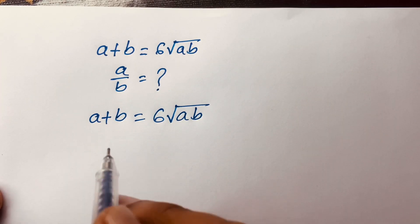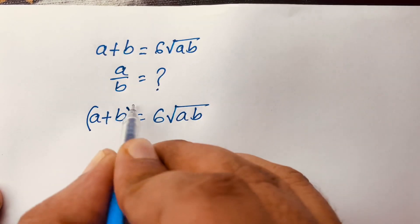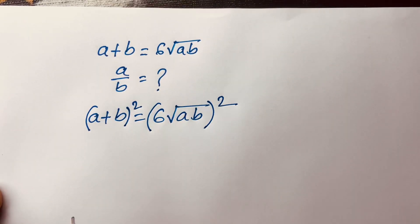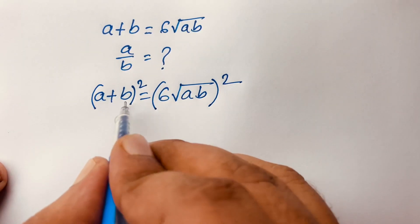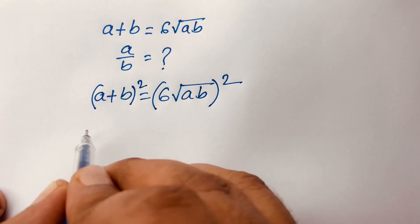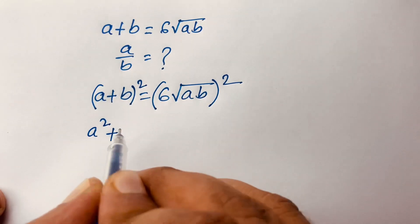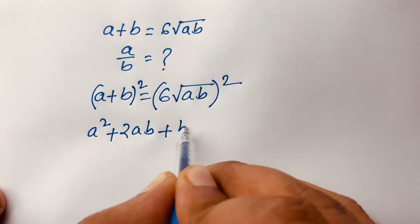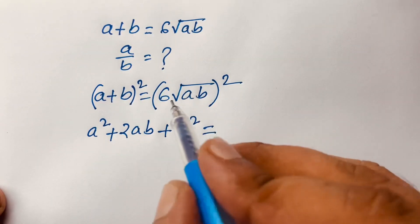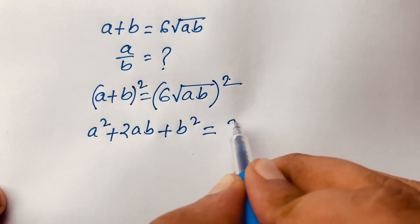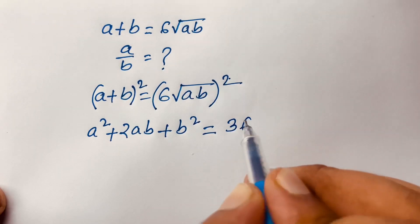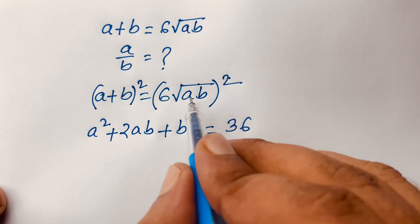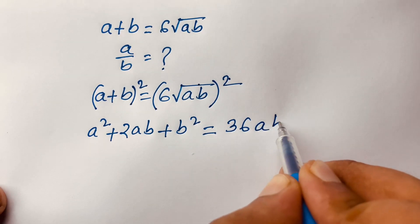I use both sides whole square. Here I can see easily here is A plus B whole square. It will be A square plus 2AB plus B square is equal to 6 square, which is 36. And in this case, the square root and square are cancelled. We will find out AB.